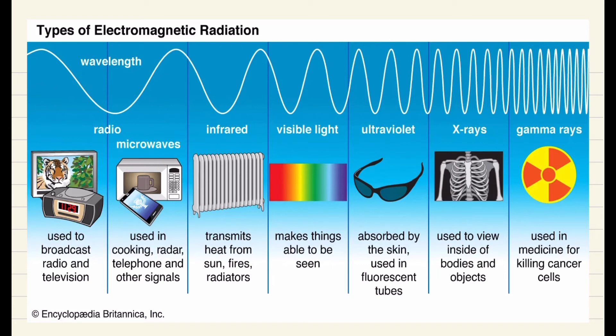Then comes the visible light. Visible light basically helps us to see the things around us. If there are no visible light rays, then we will not be able to see the objects around us. So it makes things able to be seen.